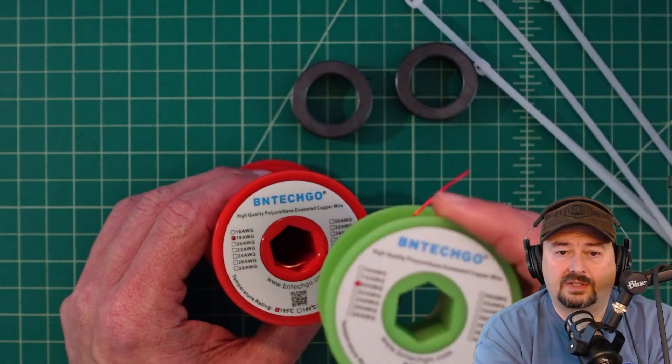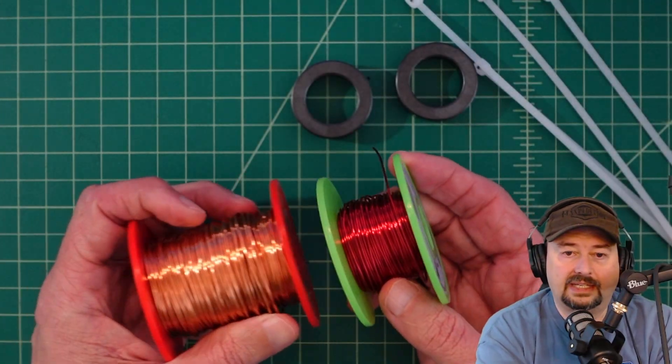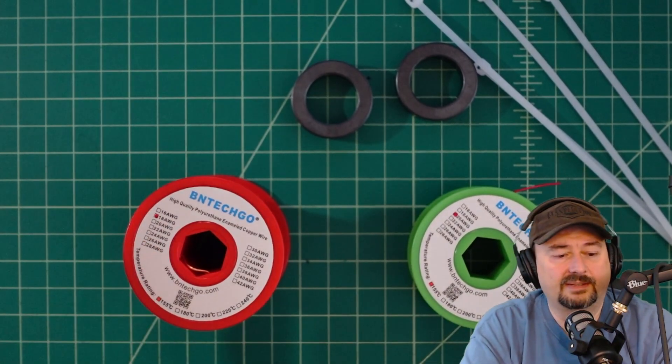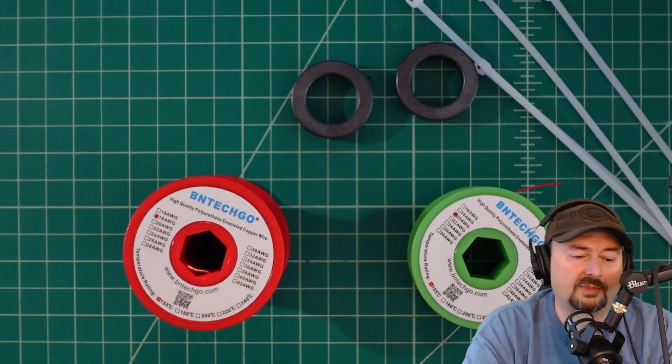This green one is 20 gauge and this is 18 gauge. You may be able to see a little bit of a difference. We're going to use the 18 gauge.